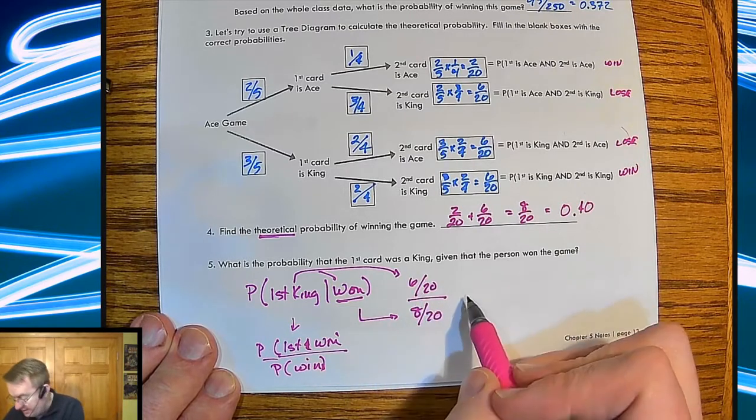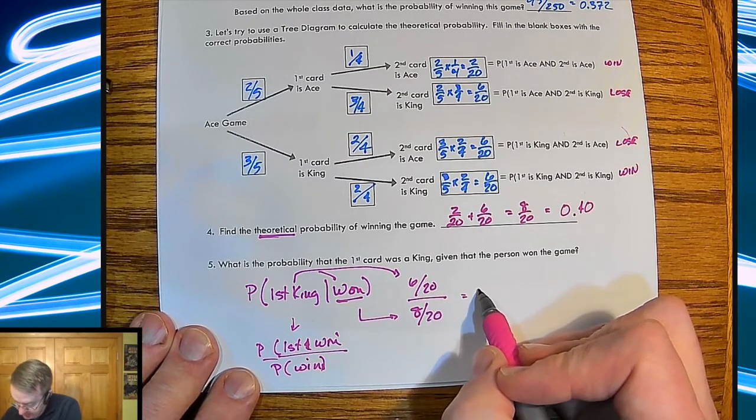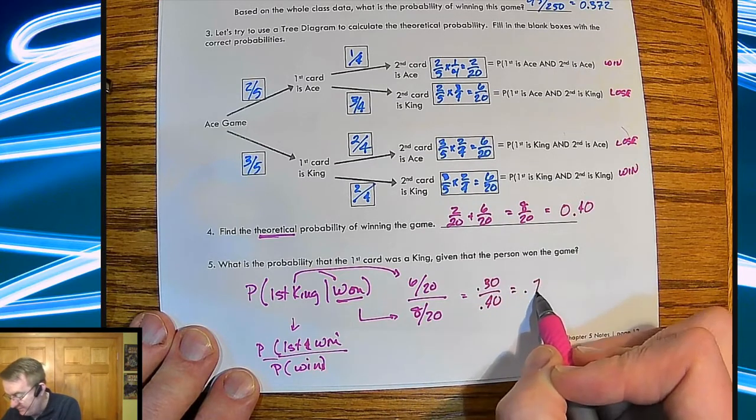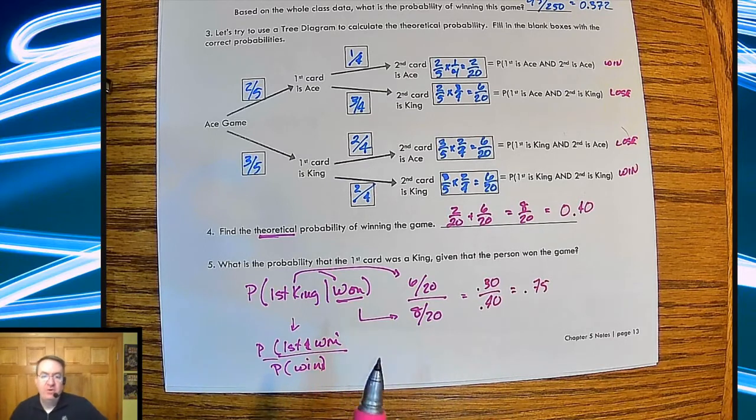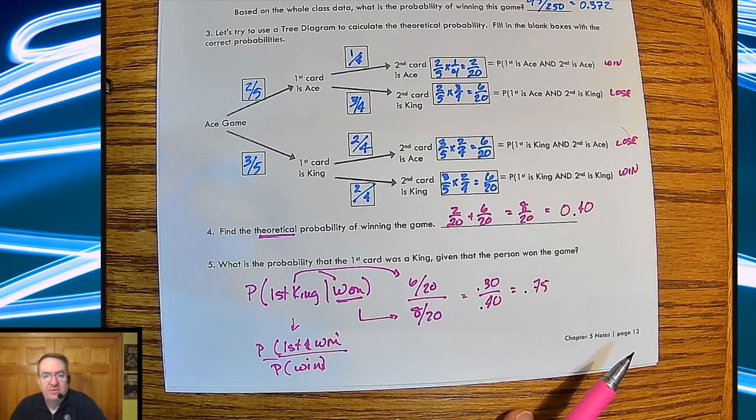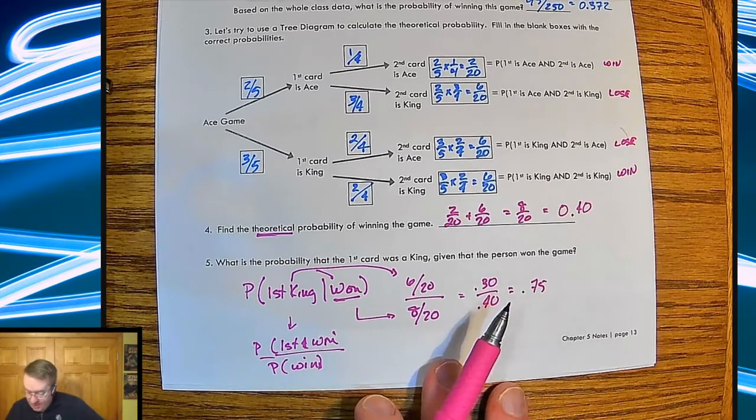So I get six out of 20, so that's going to be six out of eight, or you can write it out like that. You have a 75% chance. So if you know that you won, 75% of the time you had gotten a king first. Okay, a couple other things to point out.